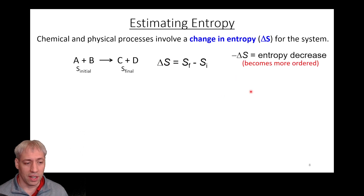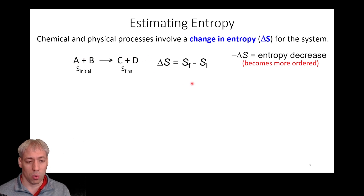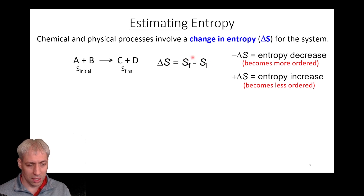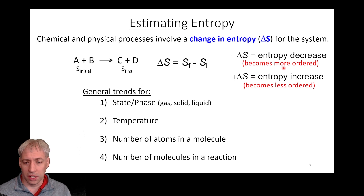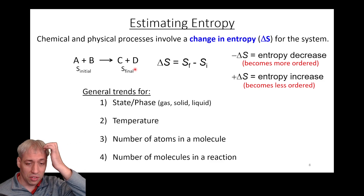If we get a negative ΔS, it says initially there was more entropy than at the final — entropy has decreased, meaning the reaction becomes more ordered. If we have a positive ΔS, the products are more disordered than the reactants — the final entropy is greater than the initial. We want to know how the entropy changes. We can do this quantitatively using tabulated values like we did with ΔH, but there are also general trends we can use to just look at a system and make a prediction about whether entropy increases or decreases.